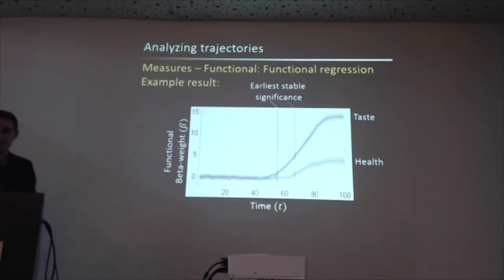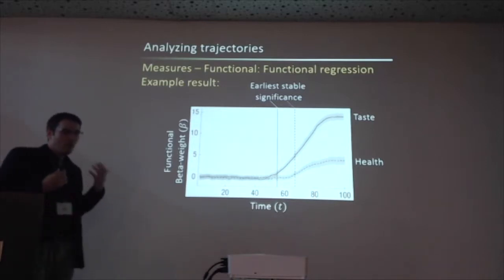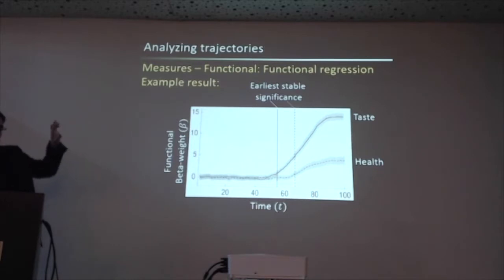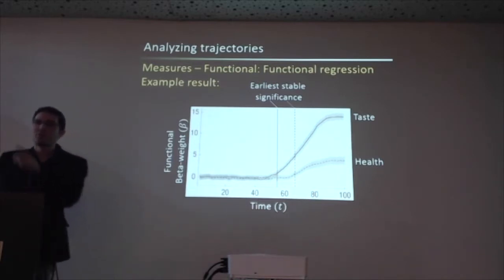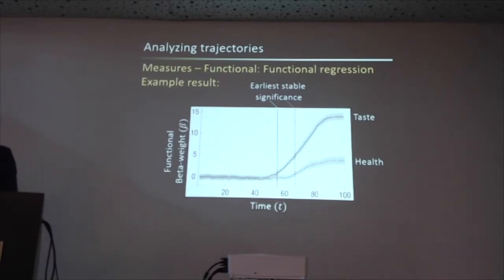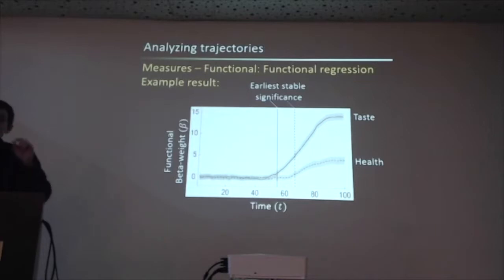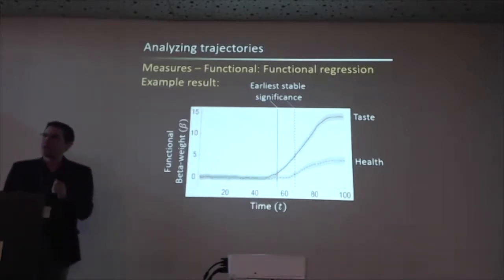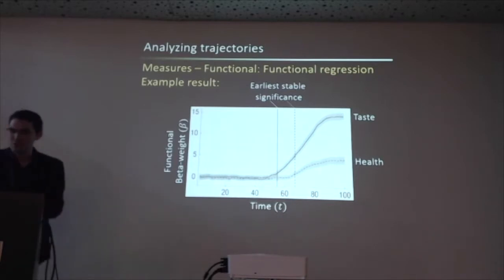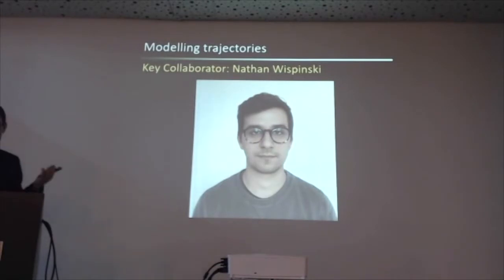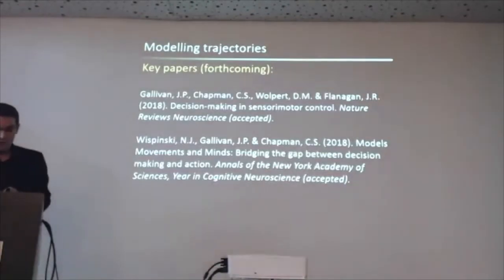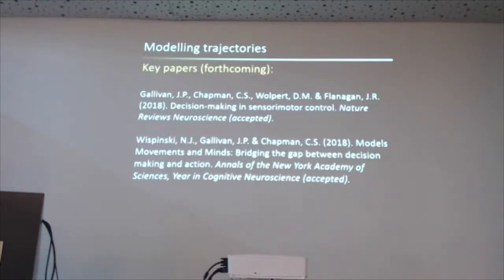That's the end of my part about analysis. I'm going to move into what I think is even more exciting and more important — it's nice to have measurement tools, but I think we need nice theoretical tools as well. I want a computational model that can help me understand what's going on in reach trajectories, and much of this work has been pioneered by my grad student Nathan Wispinski. We've also got a couple of review papers coming out — one in Annual Reviews Neuroscience that I wrote with Jay, Daniel Wolpert, and Randy Feigin, and another that Nathan, Jay, and I wrote. Both are accepted and will be coming out this year.